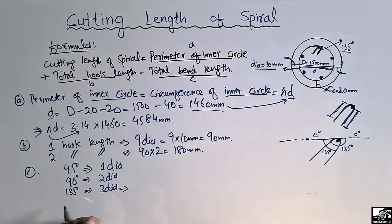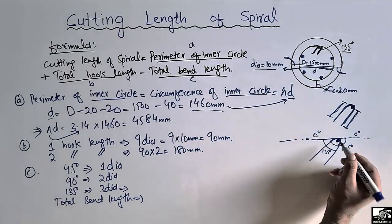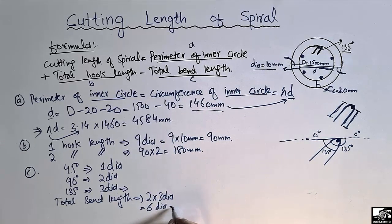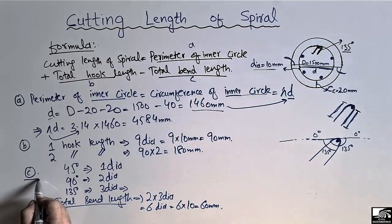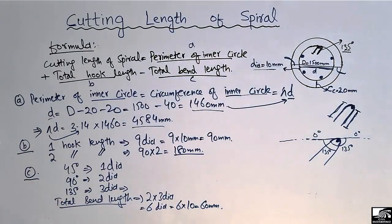Since we have 135-degree bends, the bend length per bend is 3d. There are two bends, so the total bend length = 2 × 3 × 10 = 60 millimeters. To summarize: perimeter of inner circle A = 4584 mm, total hook length B = 180 mm, and total bend length C = 60 mm. All parameters are now known.